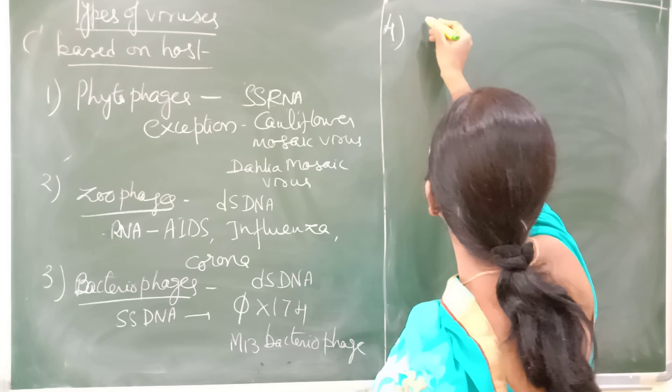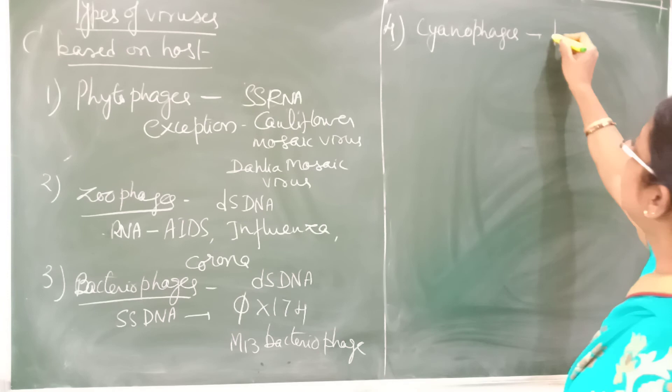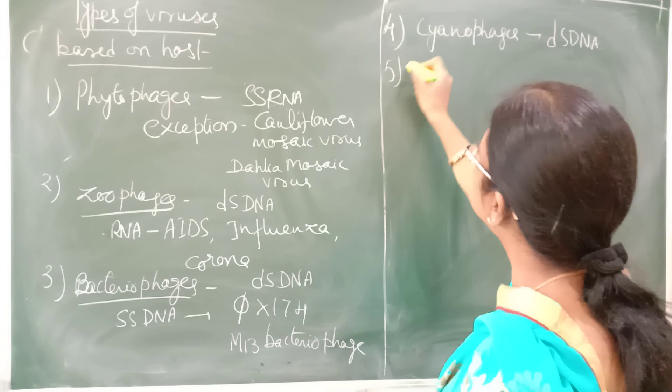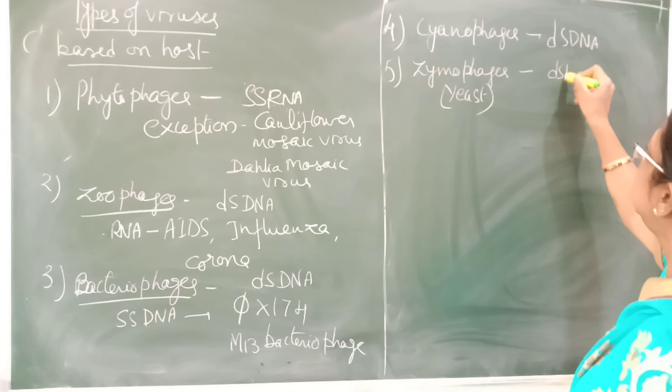The fourth type are cyanophages, which attack blue-green algae or cyanobacteria. The fifth type attack yeast. In both cases, double-stranded DNA is the genetic material.